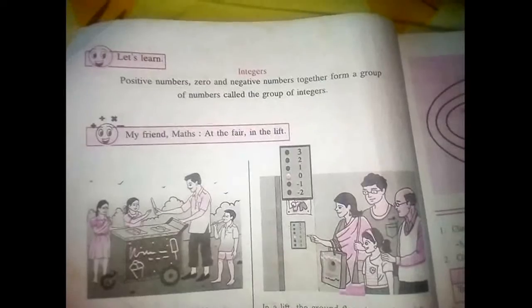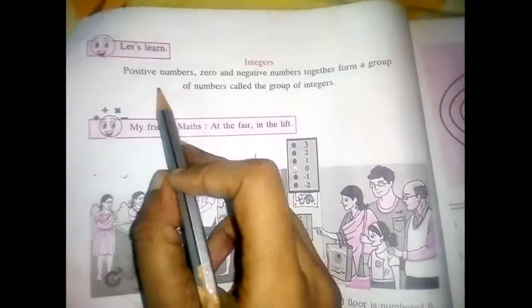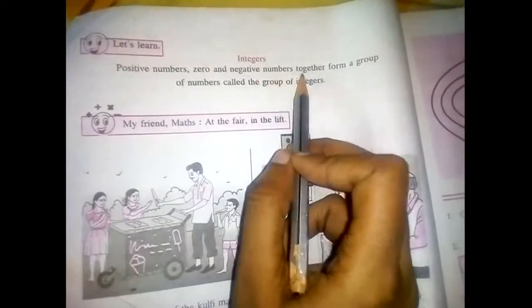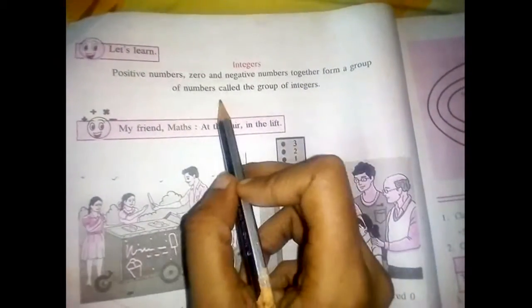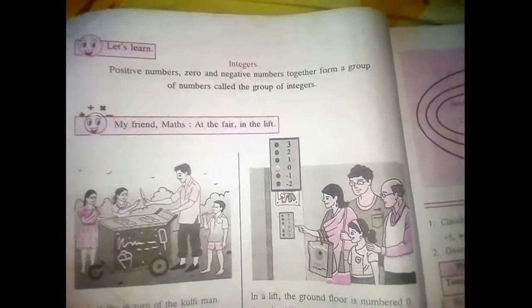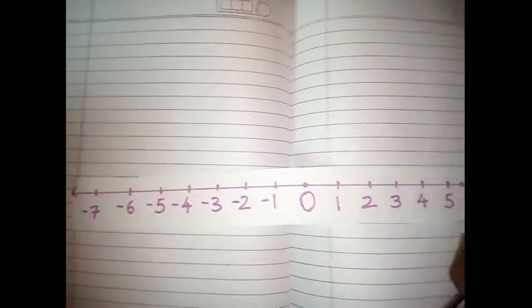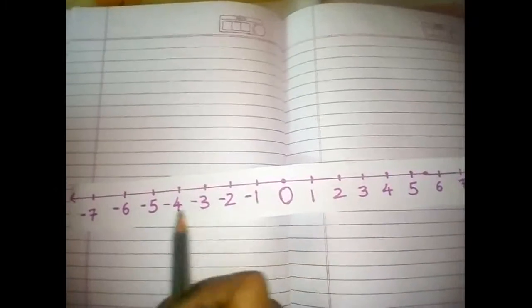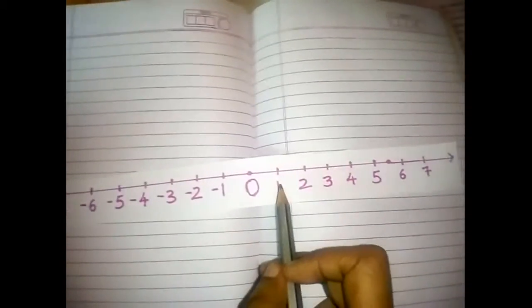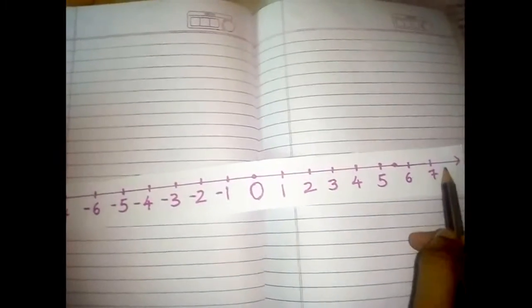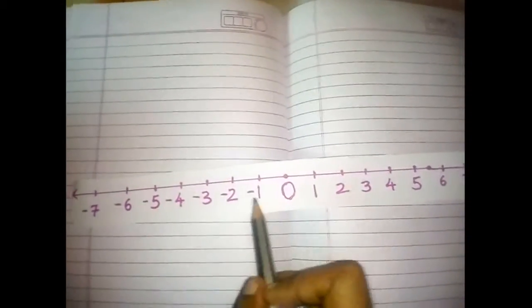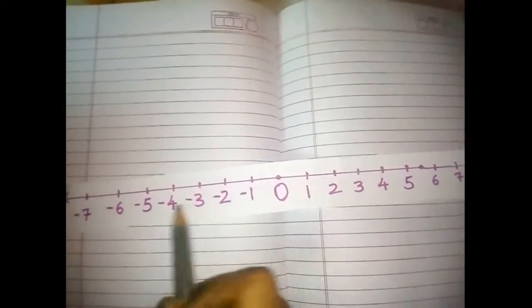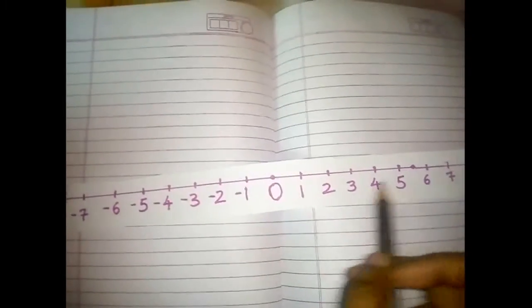We are going to study the definition of integers on textbook page number 14. Positive numbers, 0, and negative numbers together form a group of integers. On the number line, numbers on the left side of 0 are all negative numbers, and numbers on the right side of 0 are all positive numbers. All these numbers together are called integers.